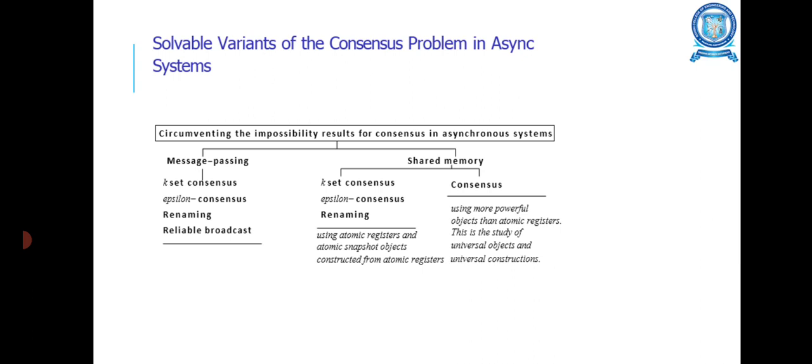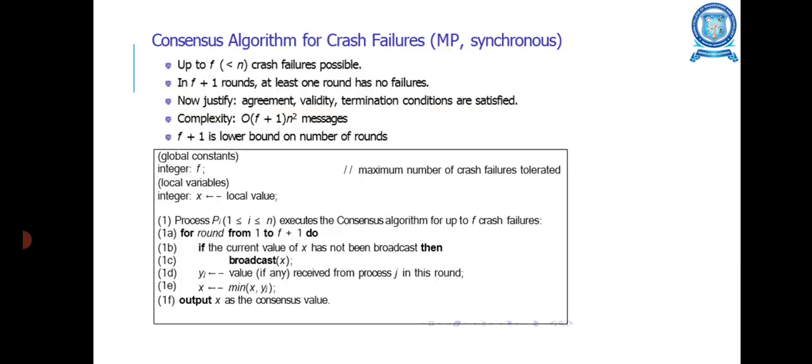The consensus algorithm for crash failures: Message passing synchronous system, up to F less than N crash failures possible. If F plus one rounds, at least one round has no failures. Now justify agreement, validity, and termination conditions are satisfied. The complexity of this consensus algorithm for crash failures is order of (F+1) times N squared messages. F+1 is the lower bound on the number of rounds. This is the consensus algorithm for crash failures.